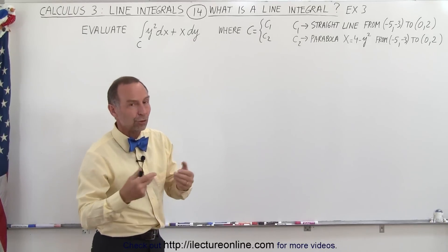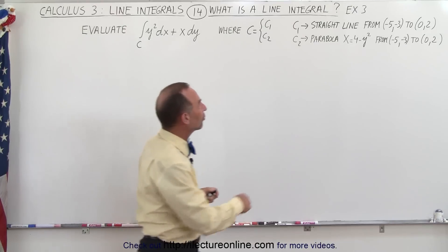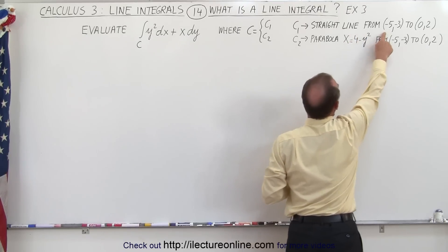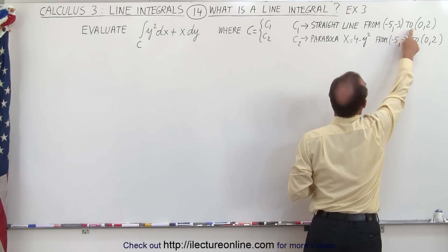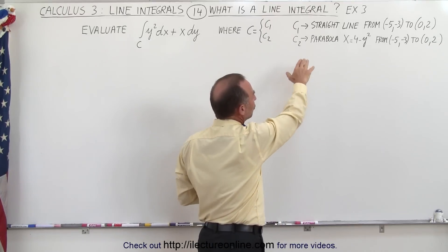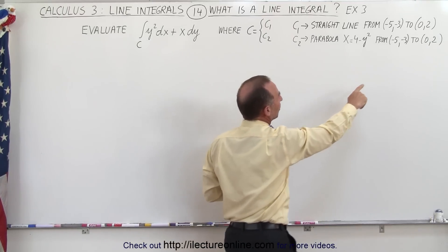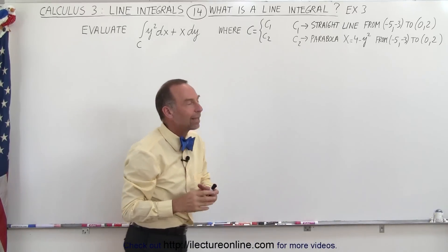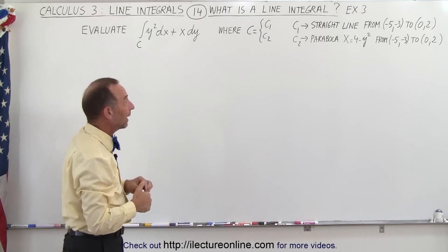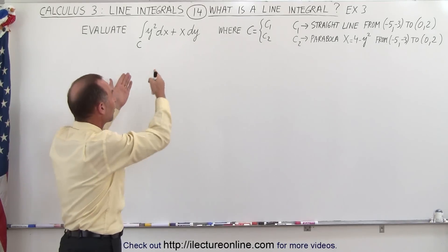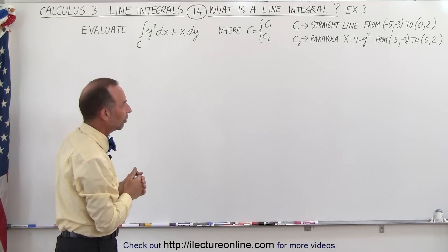Notice that C1 is a straight line from the point minus 5, minus 3 to the point 0, 2. The next time, on the next example, we'll use a parabola. Again we start from the same point and end at the same point, so this is taking two different paths, so we should get two different answers, because typically when we overlay a different curve on top of an equation we'll end up with a different result.